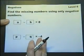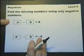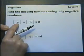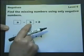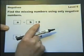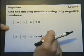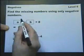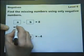Find the missing numbers using only negative numbers. So I've got to have a negative number there and a negative number there and end up with positive 8. So if I put negative, oh I don't know any number there, let's put 2 there shall we.